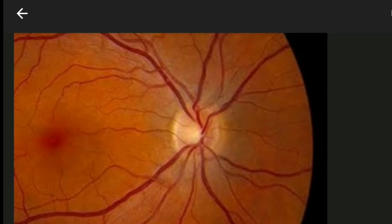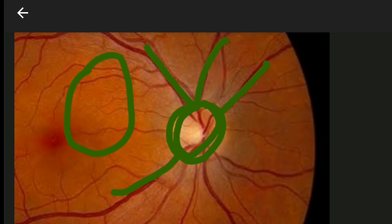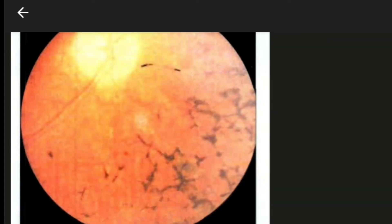This is a picture of a normal retina. Here you can clearly see the optic disc and the retinal blood vessels arising from the optic disc. There is no attenuation here and the optic disc is clear.